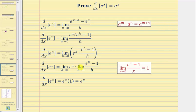For the second limit, we have the limit as h approaches zero of e to the h minus one divided by h, which we proved earlier is equal to one using the squeeze theorem. So we have e to the x times one, which equals e to the x, and therefore we have our proof: the derivative of e to the x with respect to x equals e to the x.